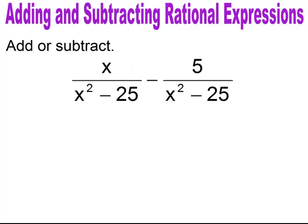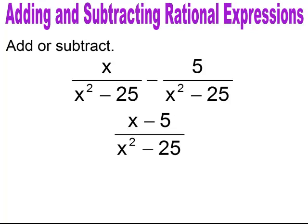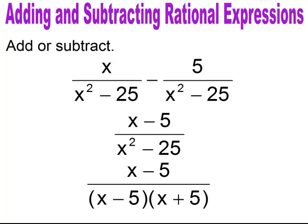Pause and try. In this case you had x minus 5 over x squared minus 25. x squared minus 25 is the difference of two squares, so it factors to (x minus 5)(x plus 5). Cancel the common factor of x minus 5 and you're left with 1 over x plus 5.